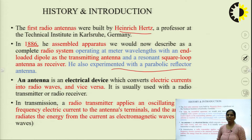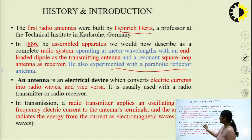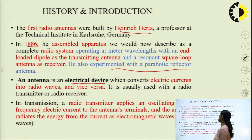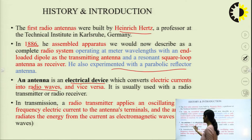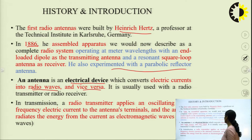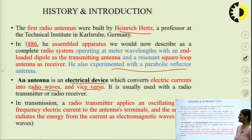What do you mean by antenna? An antenna is an electronic device which converts electric currents into radio waves and vice versa. It is usually used with a radio transmitter or radio receiver.